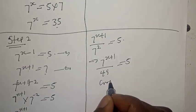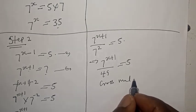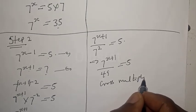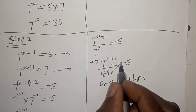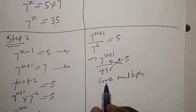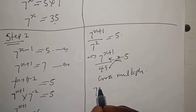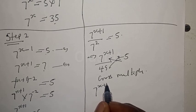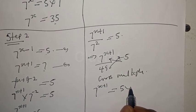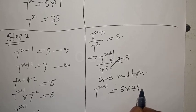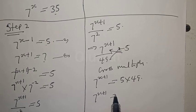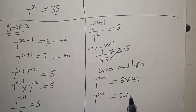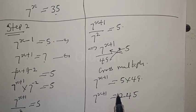That is 7 raised to power x plus 1 over 49 — since 7 squared is 49 — is equal to 5. Let's use cross multiply: 7 raised to power x plus 1 is equal to 5 times 49. Therefore, 7 raised to power x plus 1 is equal to 245.